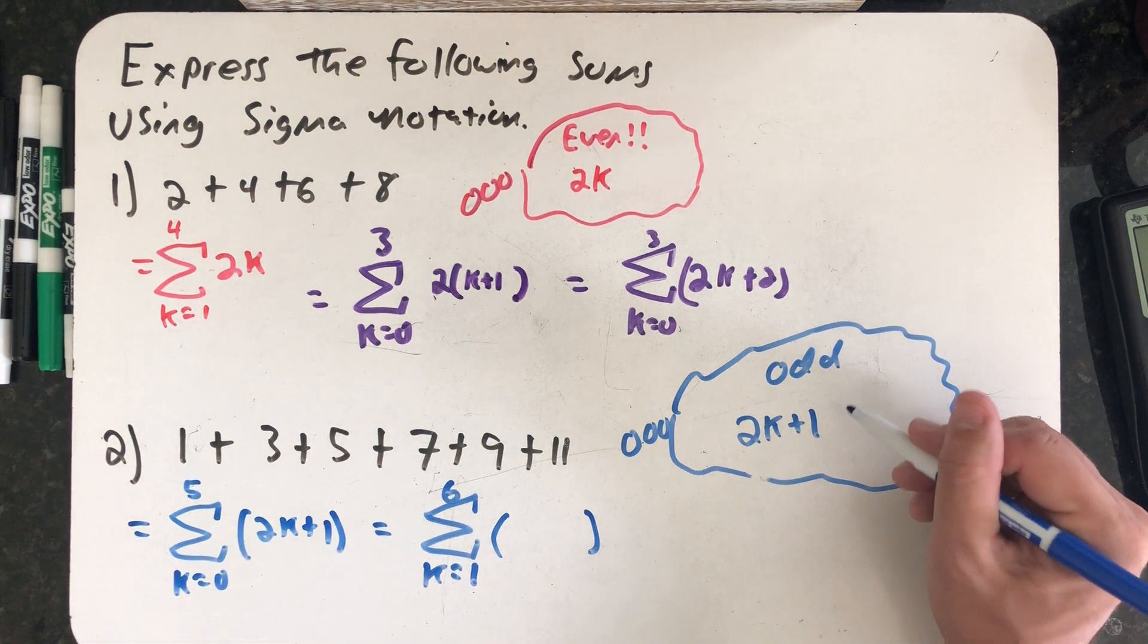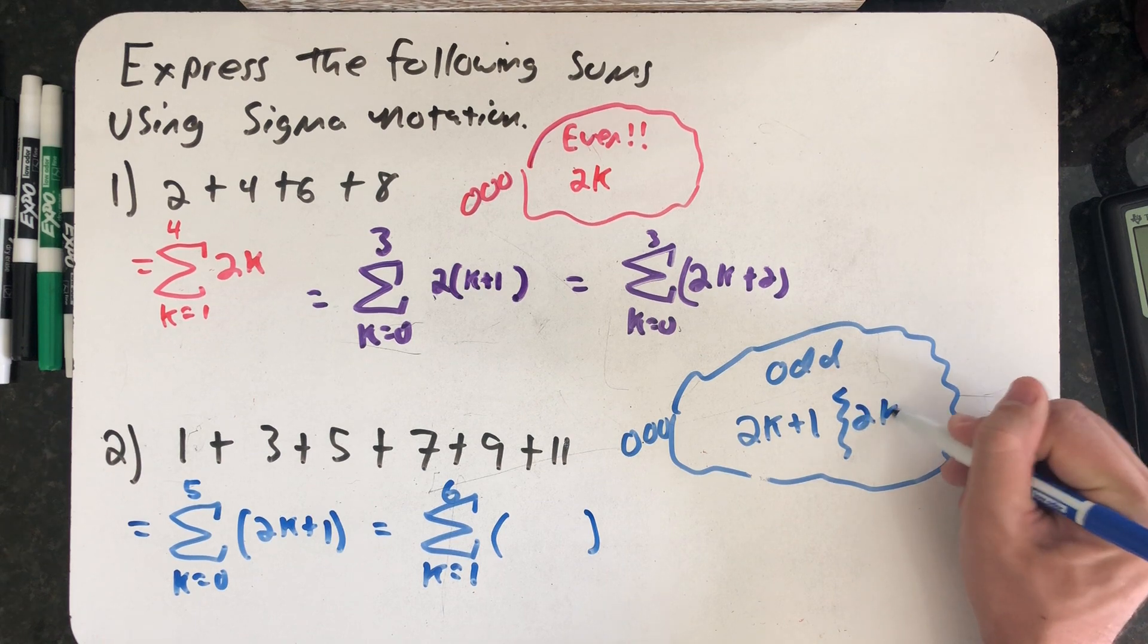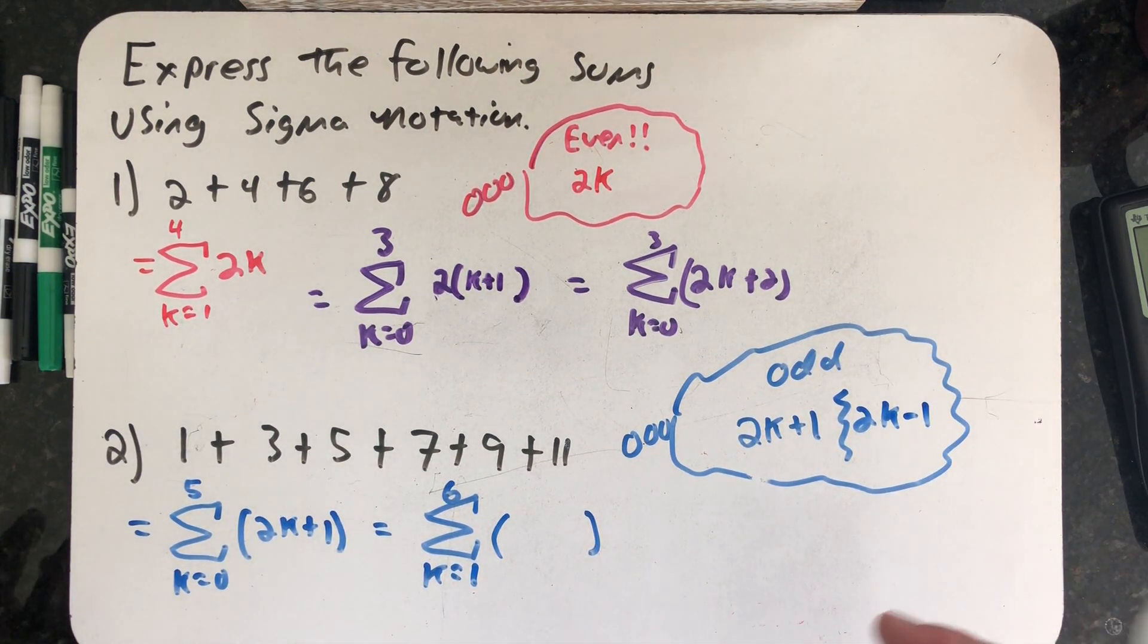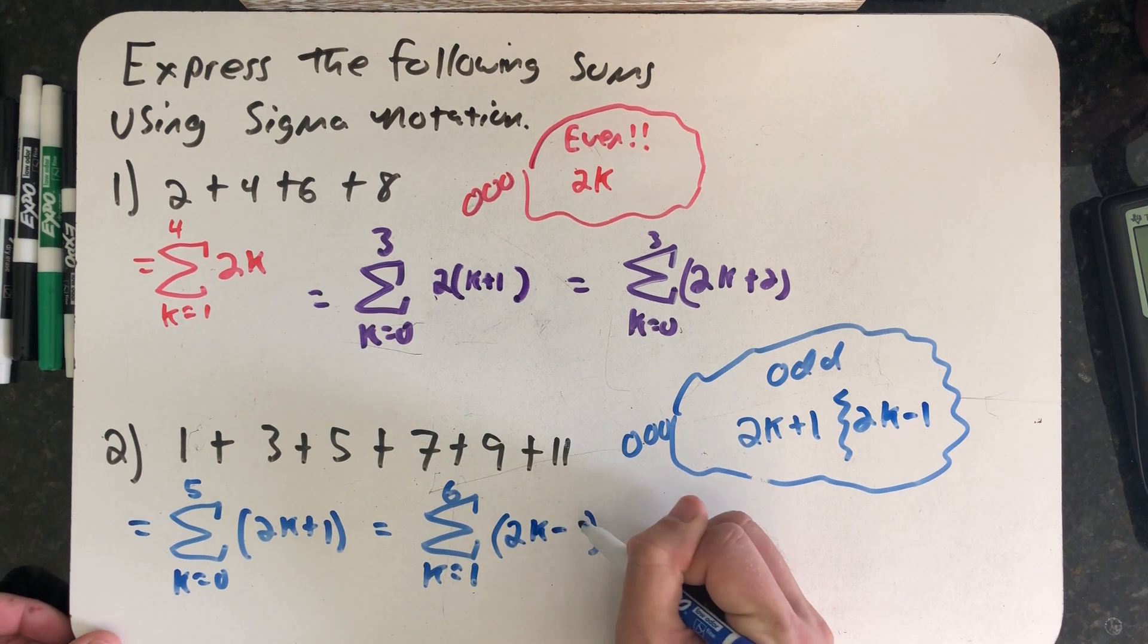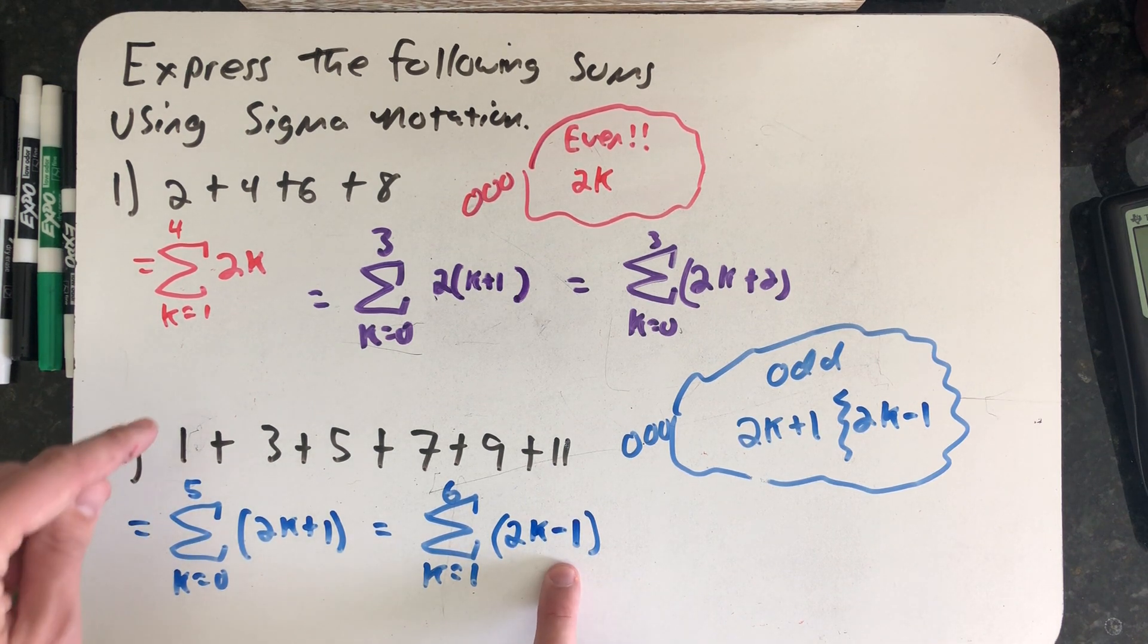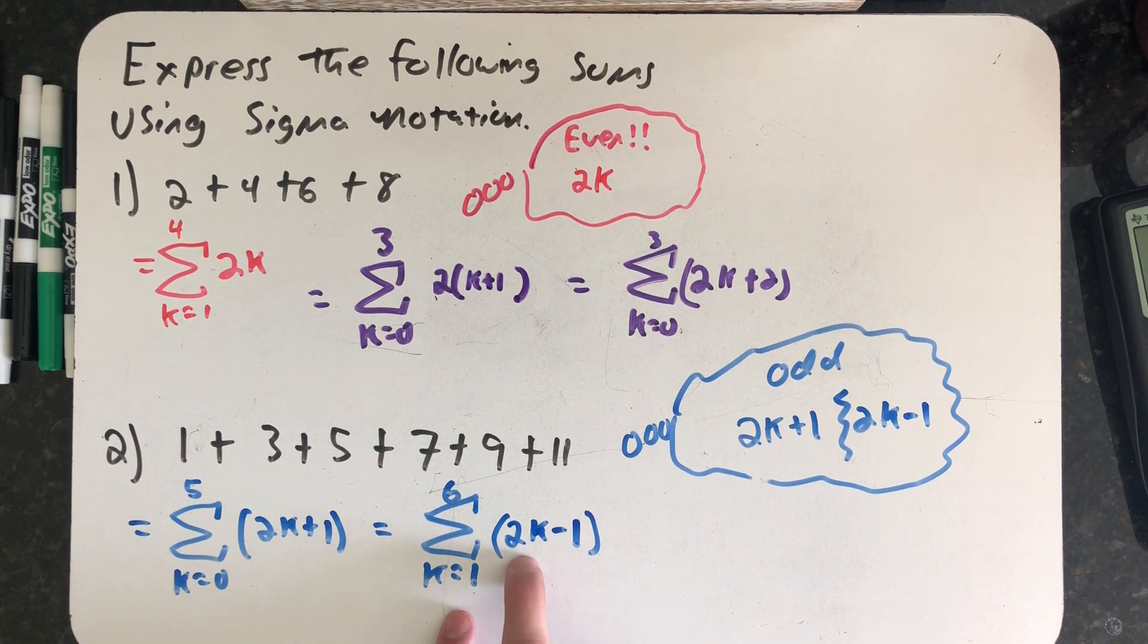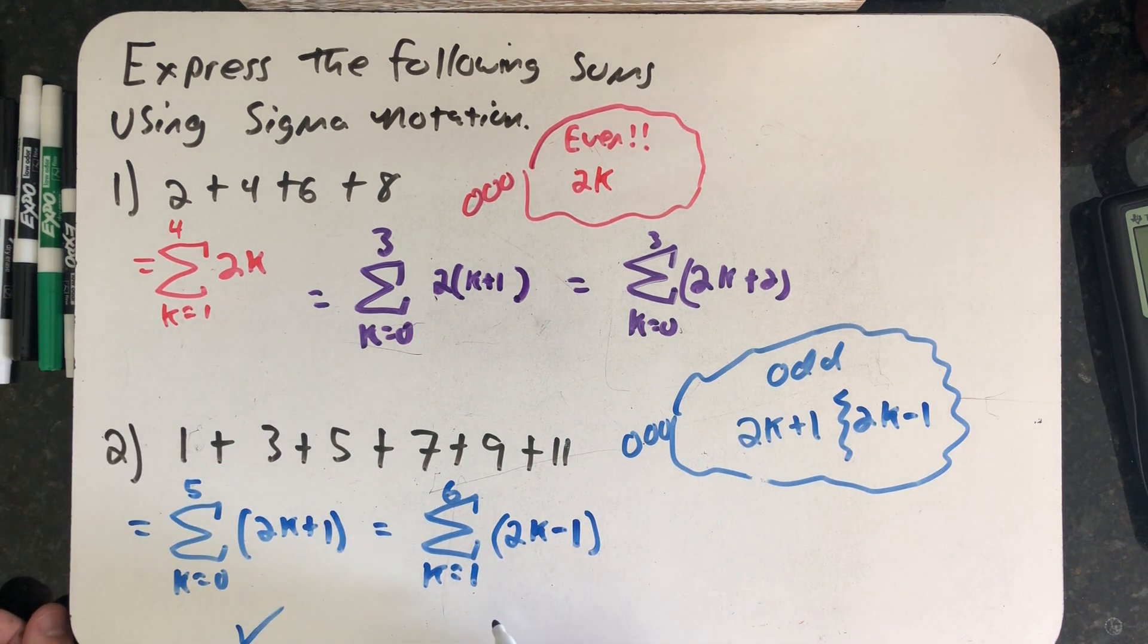Okay, well if an odd number is just something that's 1 away from an even, another way of writing it down would be to say it's 2k minus 1. And let's see if this works. I plug in a 1, I get 2 times 1 is 2 minus 1 is 1. Plug in a 2, 2 times 2 is 4 minus 1 is 3. And here are two different ways of writing down the same sum.